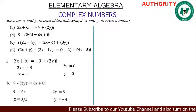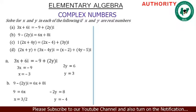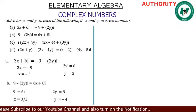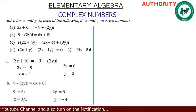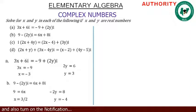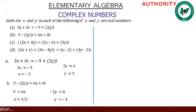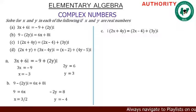The imaginary part on the left-hand side is minus 2y, and on the right-hand side is 8. So minus 2y equals 8. Dividing both sides by minus 2 gives y equals minus 4. Therefore, for part b, x equals 3 over 2 and y equals minus 4.